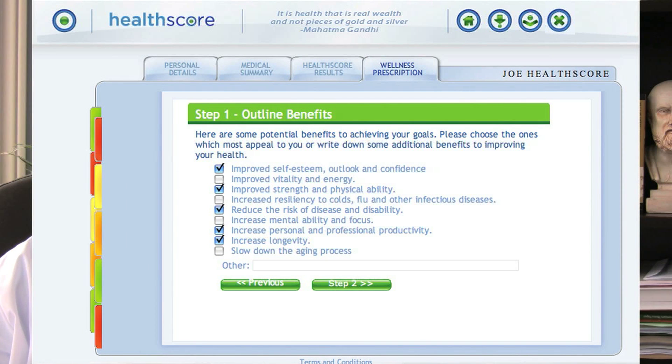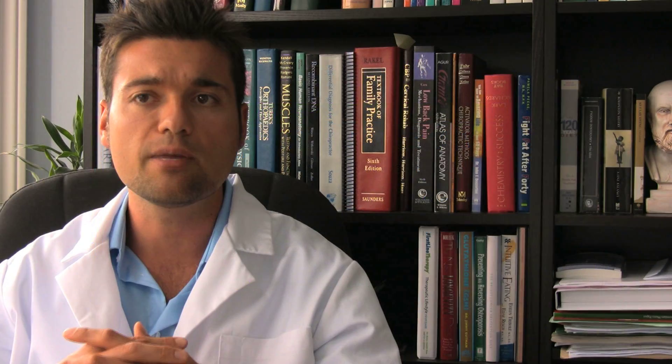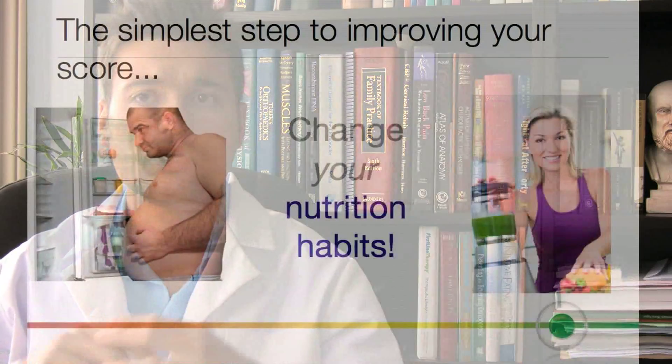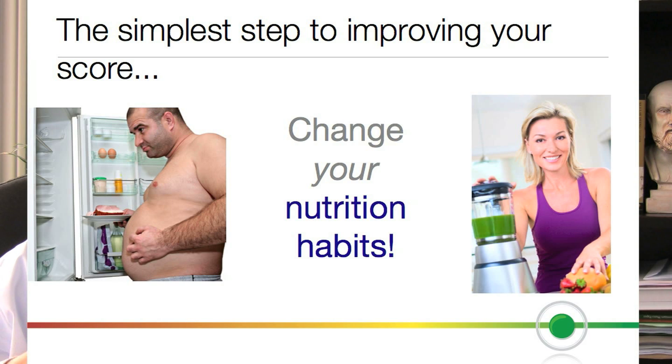The second suggested step is to conclude the goal setting exercise included in your Healthscore report. Virtually all health conditions can be improved or prevented by changing what we eat, how we move or exercise, and how we think. Changing your nutrition habits is the easiest way to improve this score. The goal setting module in your report will help identify your major obstacles to making change happen in your life.